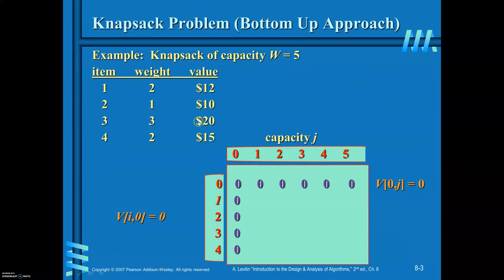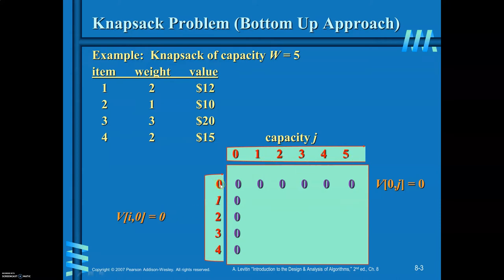Initialize the table with value 0. The 0th column and 0th row are filled with 0s because when the capacity is 0, whatever the number of items, you earn 0 value. Similarly, for all rows labeled with item 1, 2, 3, 4, when you consider 0 items in the sack, the value earned is also 0. This is the initial condition.